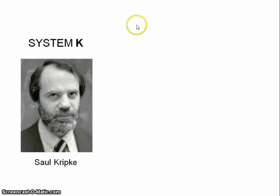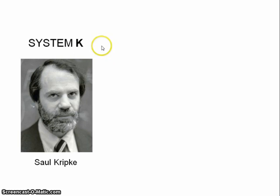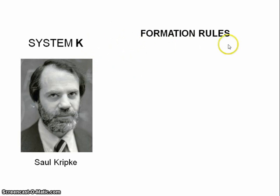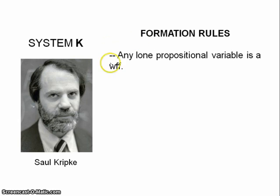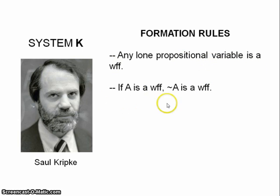We'll be looking at system K in quite a bit of detail, but first we need to run through the basic structure and semantics. First of all are the formation rules for system K. It's pretty simple — you just take the standard formation rules for propositional logic. Any lone propositional variable is a well-formed formula. If A is a well-formed formula,